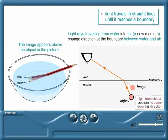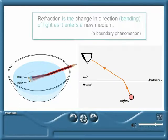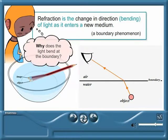Does the image appear above the object in the picture? This bending of light rays when they enter a new transparent medium is called refraction. Before we can explain this phenomenon properly, we need to understand why and how light bends at a boundary.